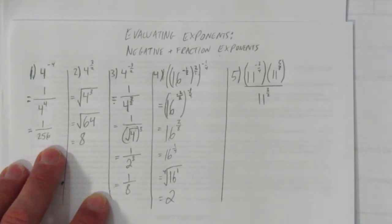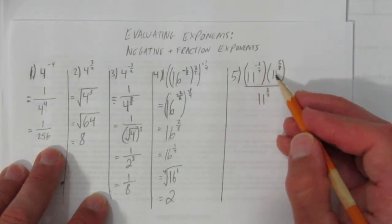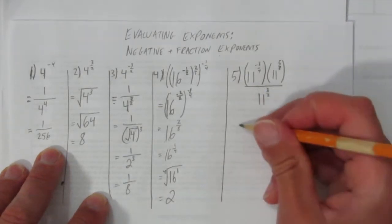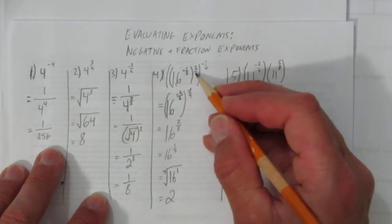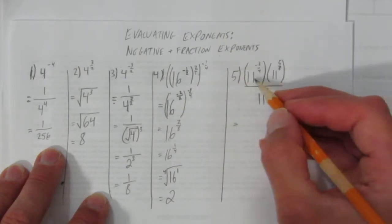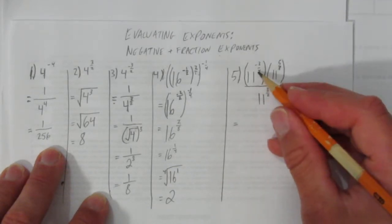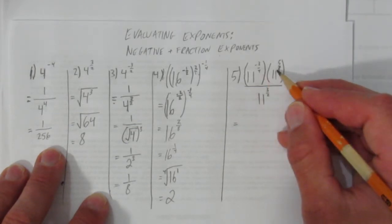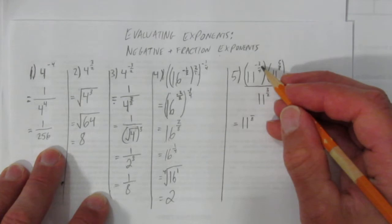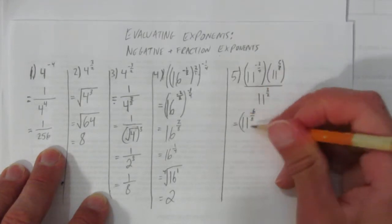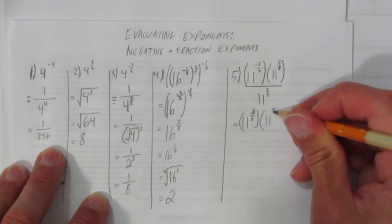One more question: 11 to the negative 3 quarters, times 11 to the 5 eighths, divided by 11 to the 3 halves. This time we're multiplying the bases — not an exponent on an exponent — so the rule is: when you multiply the same base, add the exponents. I need to add the exponents, but they have different denominators. I'll change the denominator to 8: negative 3 over 4 becomes negative 6 over 8.